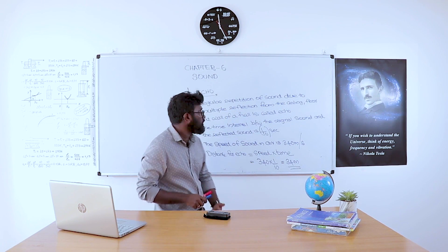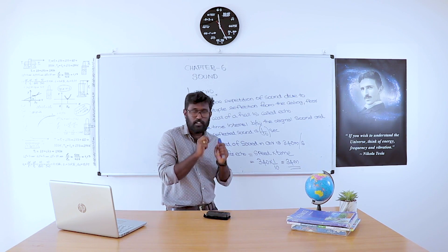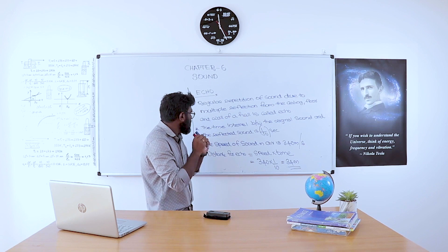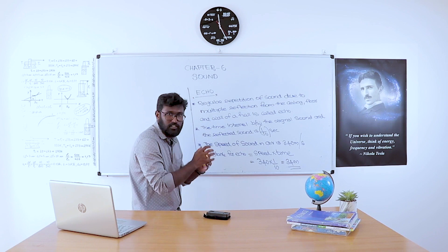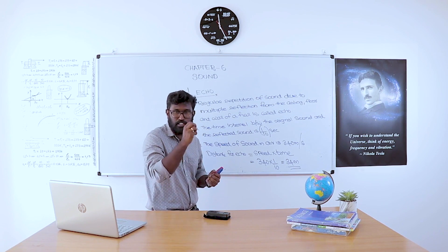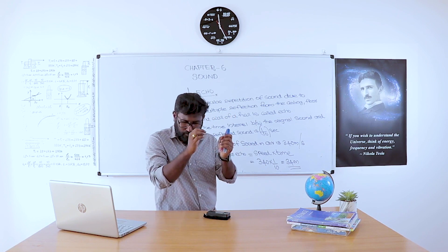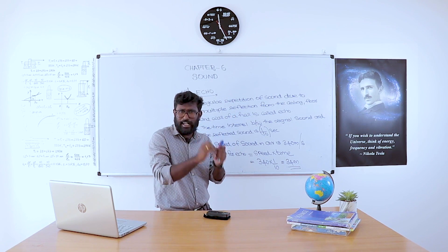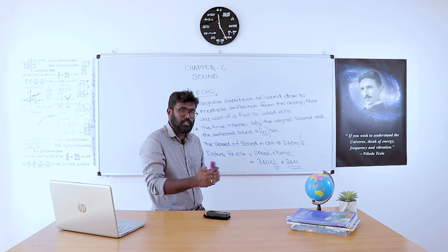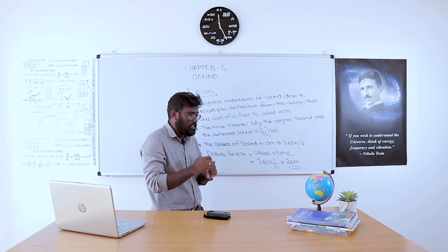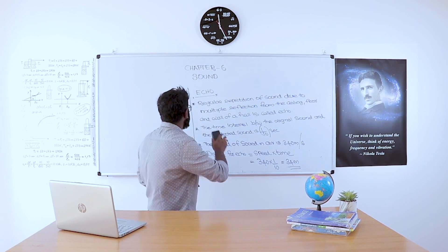The incident sound should travel a minimum distance of 17 meters and the reflected sound should travel a minimum distance of 17 meters, making the total distance 34 meters. That's all about echo. The time interval between the original sound and the reflected sound is 1/10 of a second, and with the speed of sound at 340 meters per second, distance equals 340 × 1/10 = 34 meters.